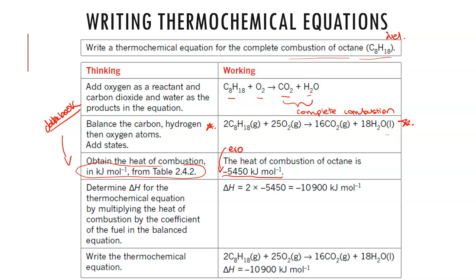We must always include the sign when talking about enthalpy of reaction to indicate whether it is endothermic or exothermic. The delta H value from the data booklet is per one mole. Since we have two moles of octane being burnt in this equation, we must multiply the per-mole value by two to get negative 10,900 kilojoules per mole. We get 5,450 kilojoules for every one mole burnt, and in this balanced equation we must burn 2 moles, so we multiply the table value by 2 for the final thermochemical equation, ensuring we show the sign to indicate it is exothermic.